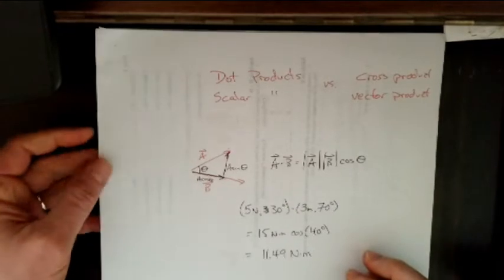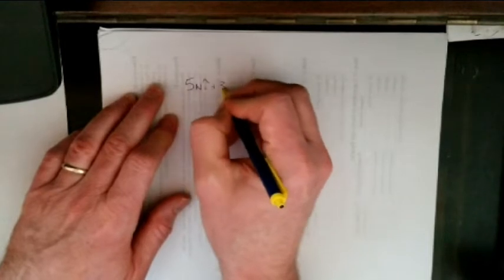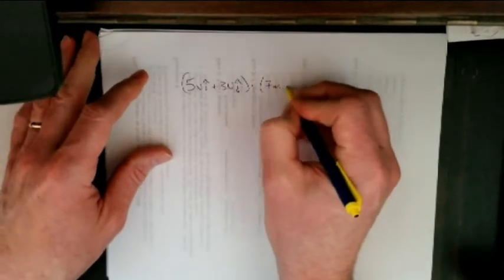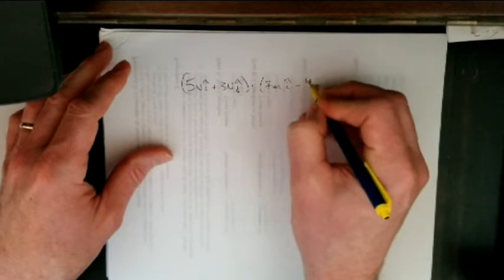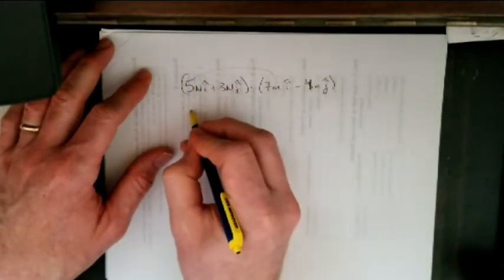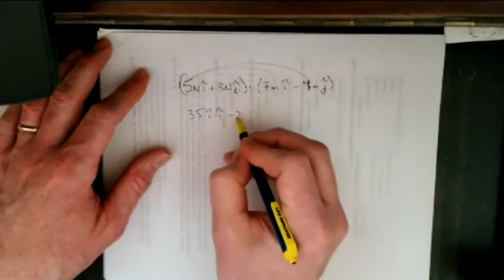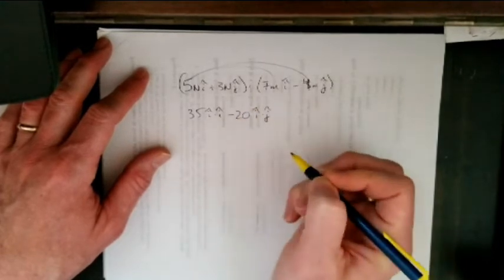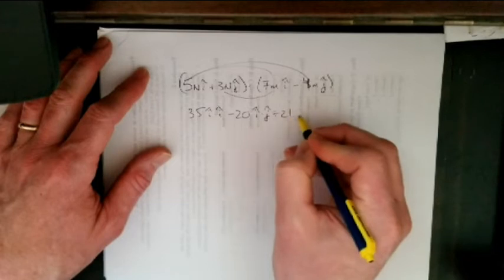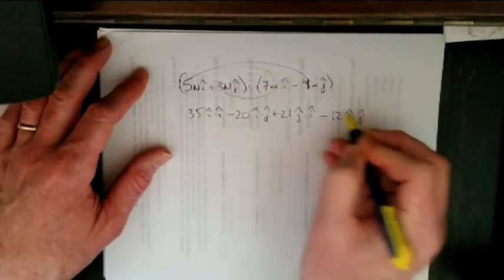Now, if I am dealing with it in rectangular form, so I have 5 newtons i plus 3 newtons j dot product with 7 meters i hat minus 4 meters j hat. Well, I am going to do it out the long way. So all I am doing is foiling here. So I get 35 i hat dot i hat minus 20 i hat dot j hat plus 21 j hat dot i hat minus 12 j hat dot j hat.